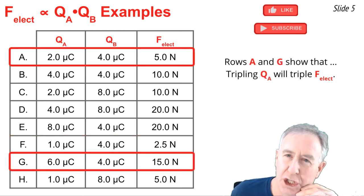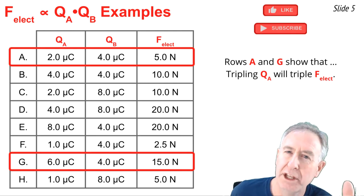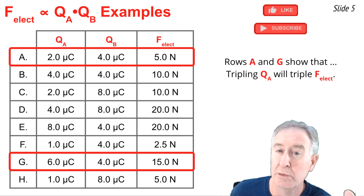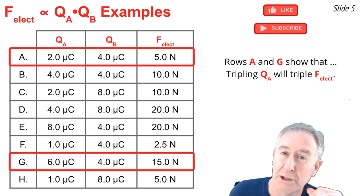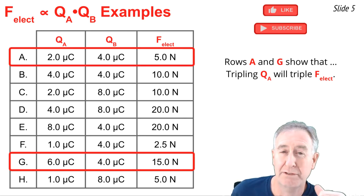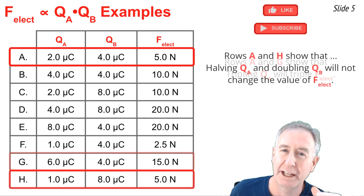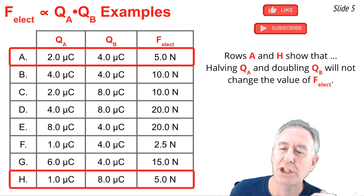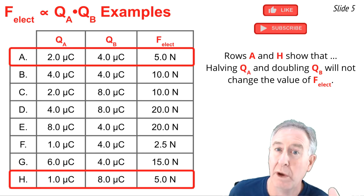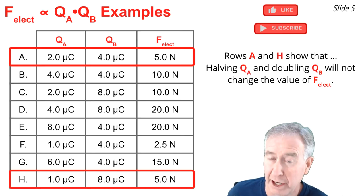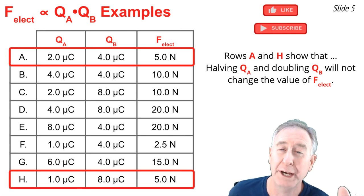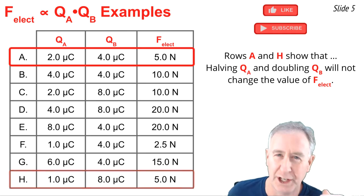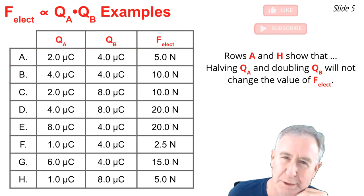Rows A and G show that if you were to triple the QA value from 2 microcoulombs to 6 microcoulombs, you would cause the electric force to triple as well, from 5 newtons to 15 newtons. Finally, rows A and H show that if you were to halve the QA value while doubling the QB value, then these two changes would cancel the effect upon one another and there'd be no overall change in the value of F electrical.